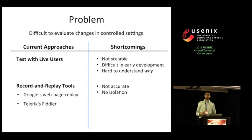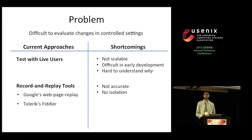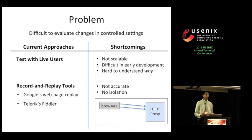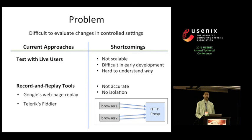Additionally, neither tool provides isolation for experiments run within them, because both configure a user's host machine such that all traffic is forwarded to the tool's proxy server. For example, if a user is running a browser as part of an experiment, all of that browser's traffic will be forwarded to the proxy. But if the user runs another application during the experiment — say, another web browser — that browser's traffic will also hit the proxy, affecting collected measurements.